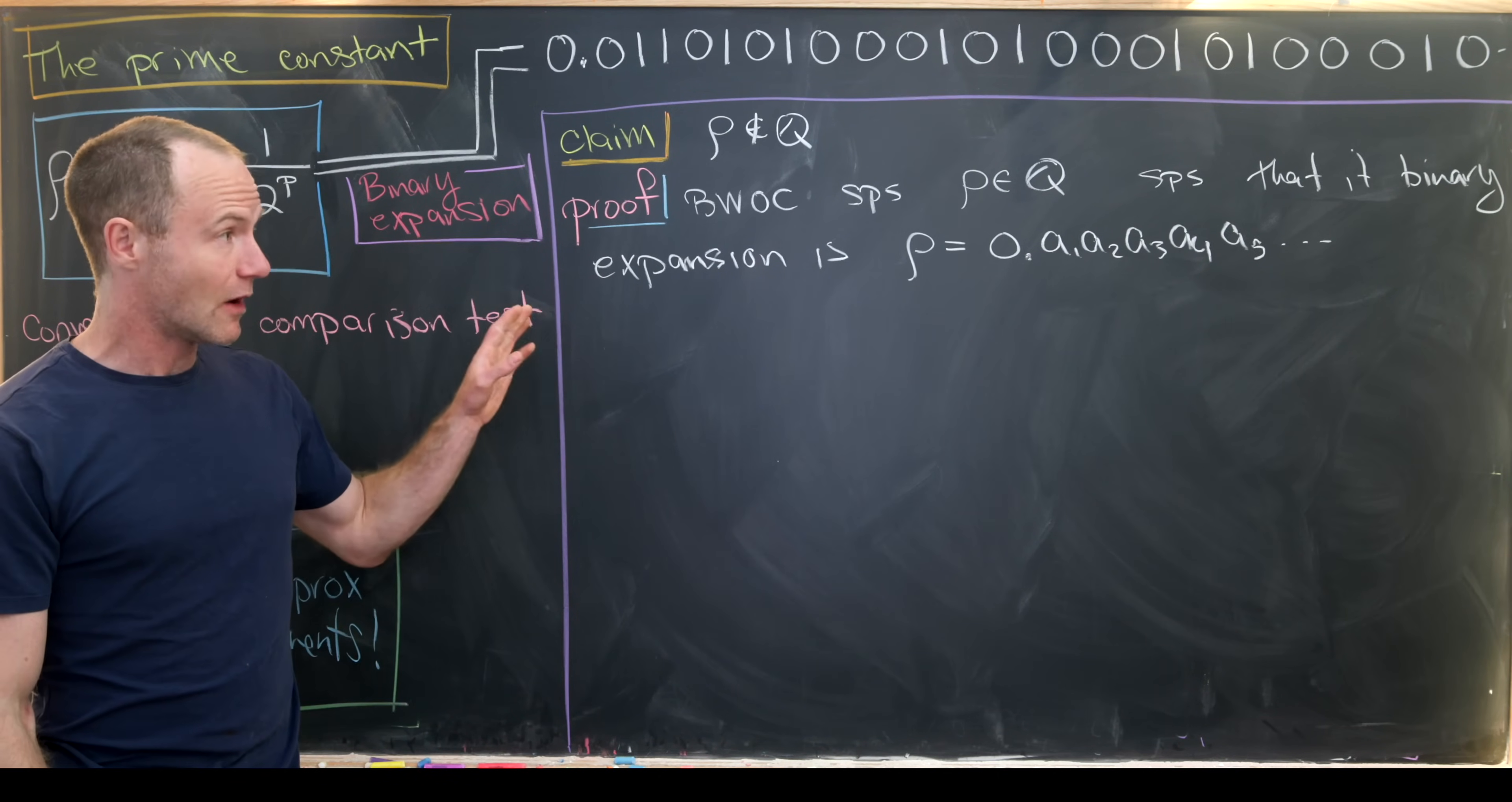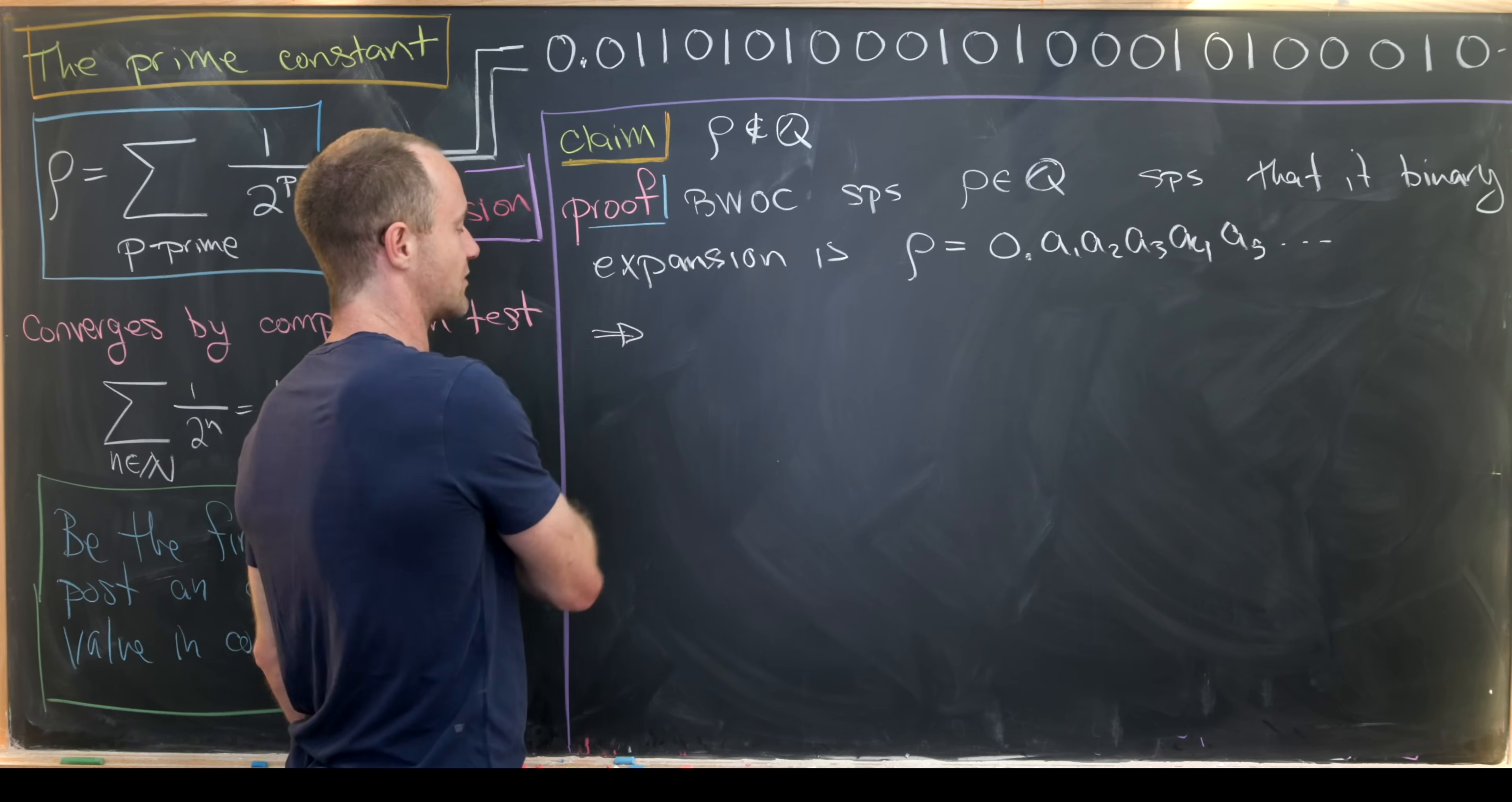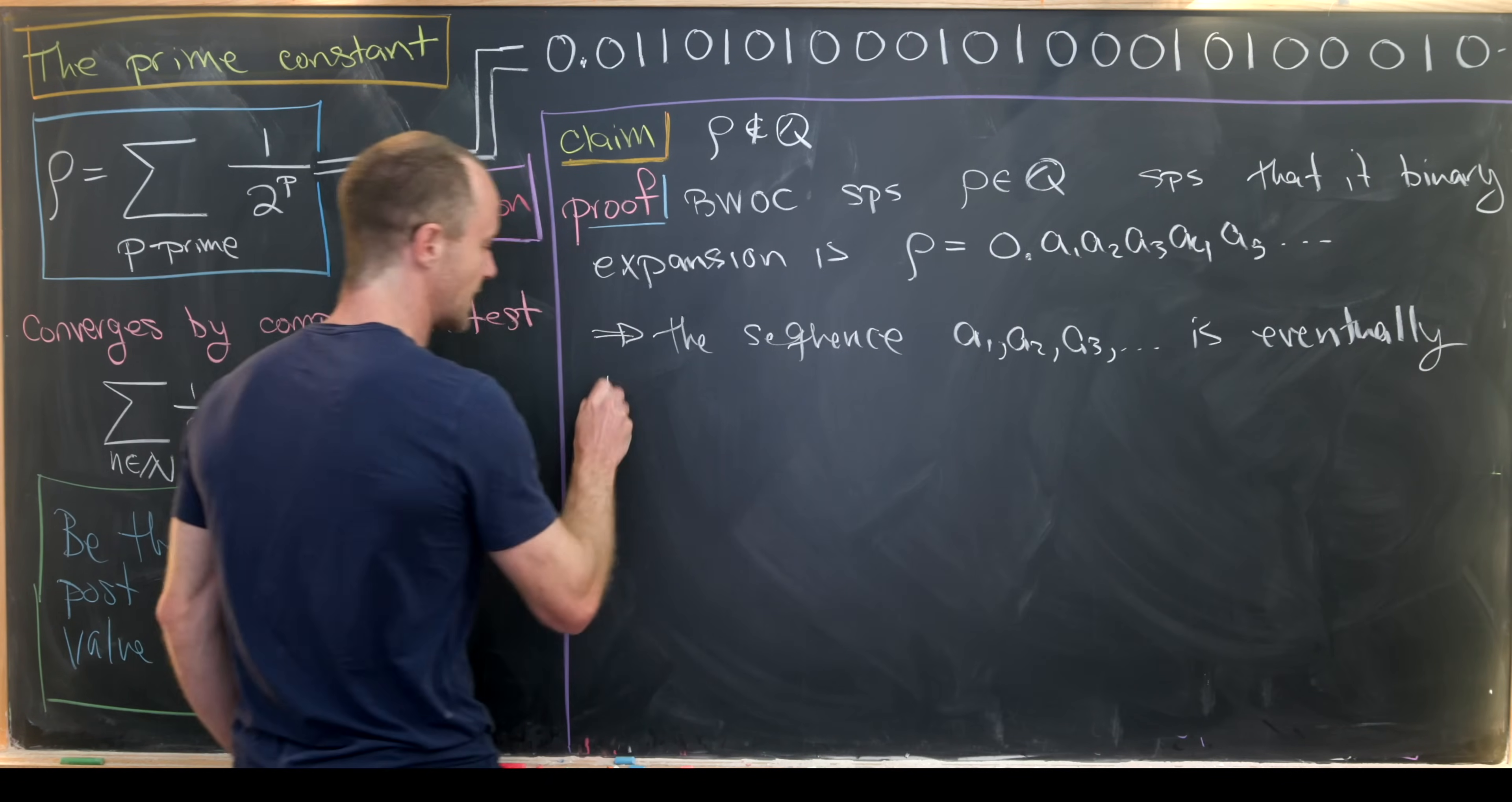So anyway, now we're going to use a well-known fact that any sort of binary expansion or decimal expansion or really any sort of base expansion of a rational number will be eventually periodic. So let's maybe summarize that here. The sequence is eventually periodic.